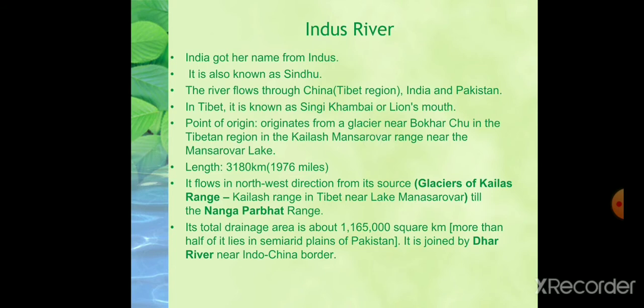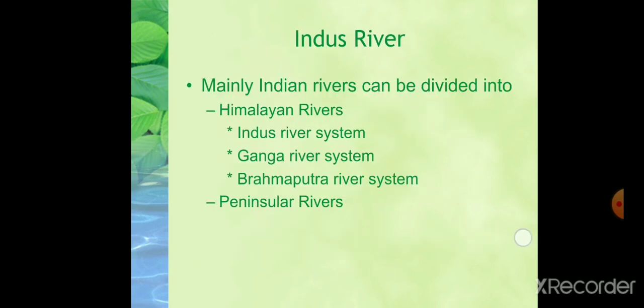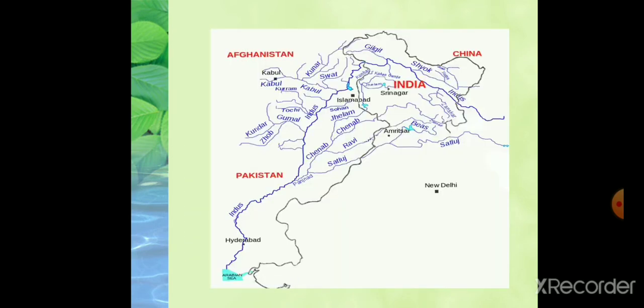The point of origin of the Indus is near Bokhar Chu in the Tibetan region, in the Kailash Mansarovar range near Mansarovar Lake. Its length is 3,180 kilometers, or 1,776 miles, and it is the longest river of Pakistan. It flows in the northwest direction from its source in the glaciers of the Kailash range in Tibet near Mansarovar Lake to the Nanga Parbat range. Its total drainage area is about 11,65,000 square kilometers, more than half of which lies in the semi-arid plains of Pakistan.